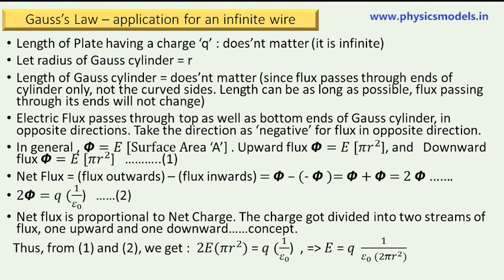The flux phi is equal to electric field strength E times surface area A. The area of the top face of our cylinder is πr², so flux becomes equal to E·πr² going upwards. The flux going downwards passes through the lower face of the cylinder, so that's again equal to E·πr². The net flux passing through the Gaussian cylinder equals flux outwards minus flux inwards, which is phi minus (−phi), equal to 2phi.